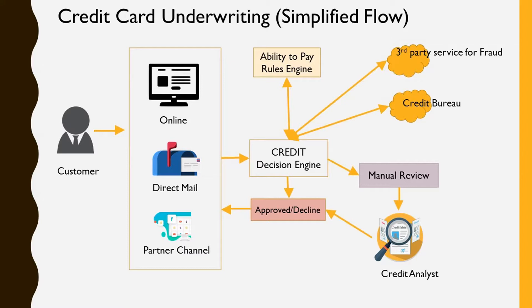Once the application is submitted, there is a credit decision engine — the brain — that decides whether the application is approved or rejected. As soon as the data comes in, the credit decision engine calls a credit bureau to get all the information about the customer: their credit score, whether they have been paying other accounts properly, or whether they have been delinquent in the past.